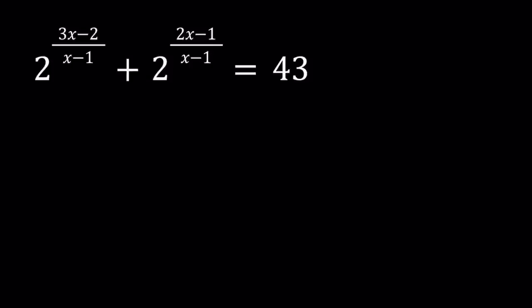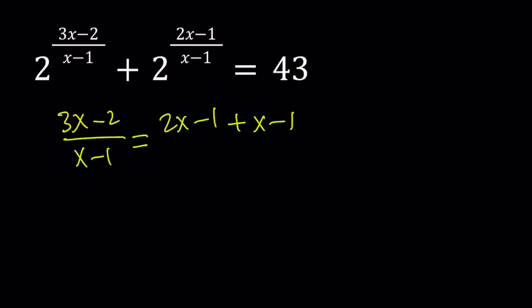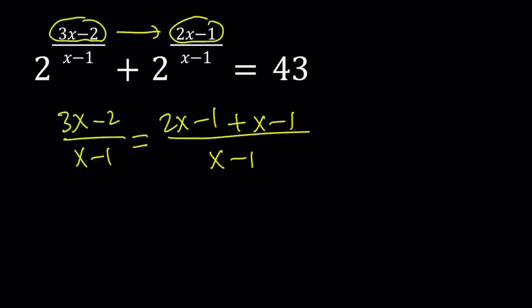Let's start by breaking down 3x minus 2 over x minus 1. Notice that between the two exponents there is actually a relationship which is going to help us solve the problem. We can write 3x minus 2 over x minus 1 as 2x minus 1 plus x minus 1, all over x minus 1. Notice that 2x plus x is 3x and negative 1 plus negative 1 is negative 2. We have a 2x minus 1 here, and 3x minus 2 can be written as the sum of 2x minus 1 plus x minus 1, which happens to be the common denominator. So that's what's going to help us.